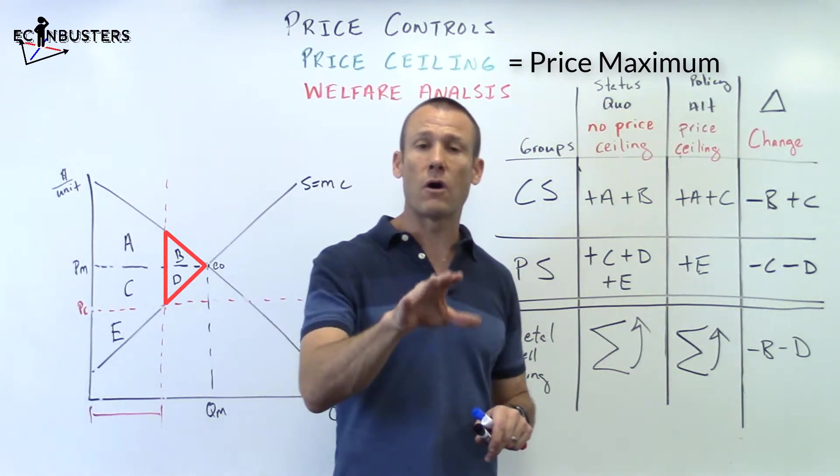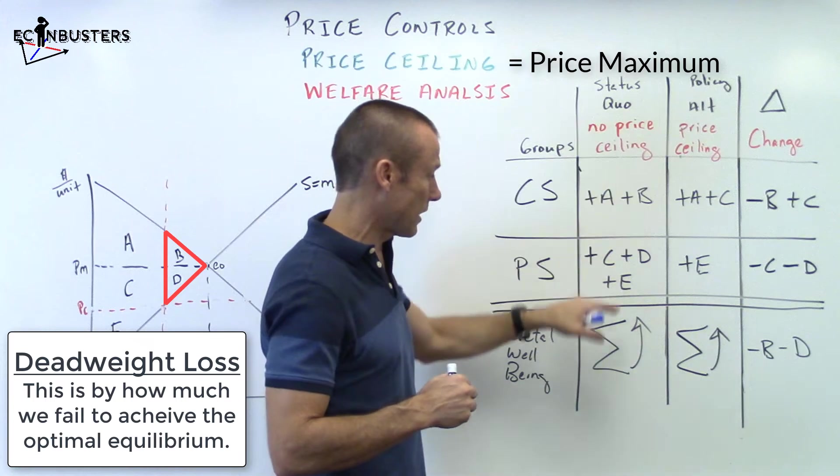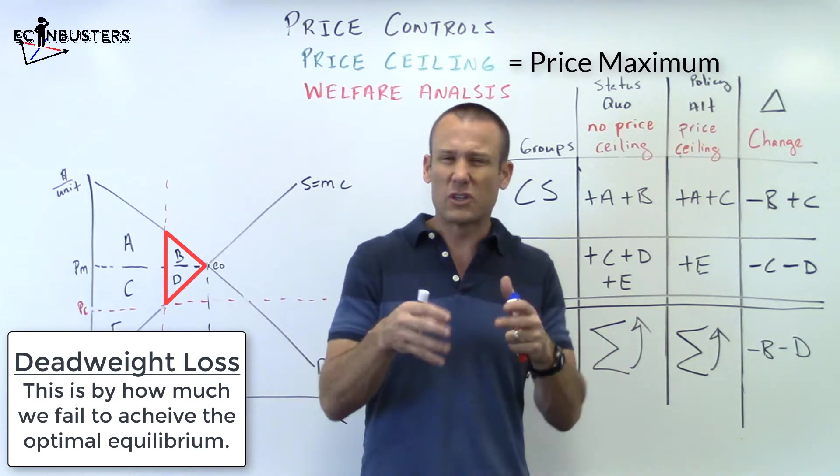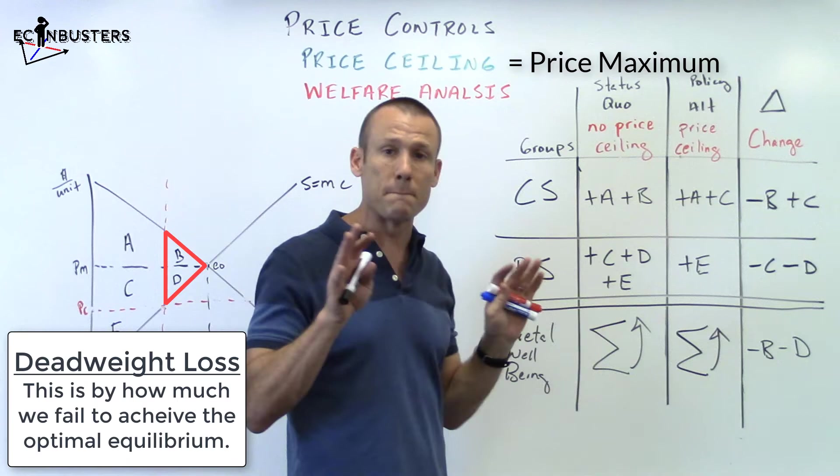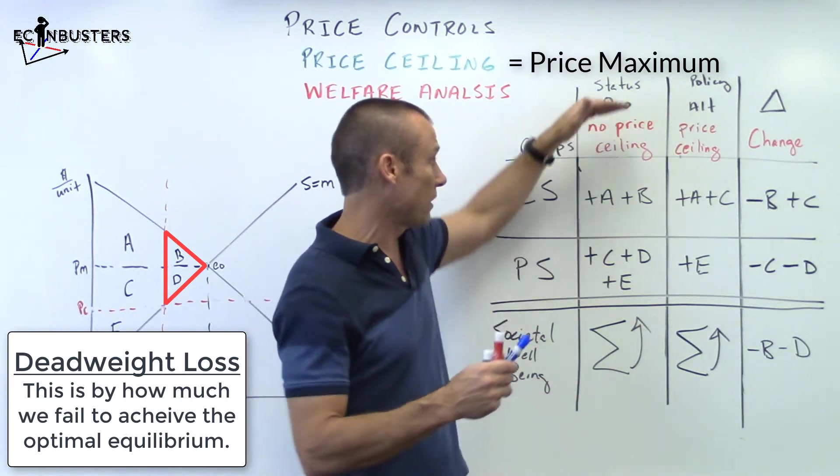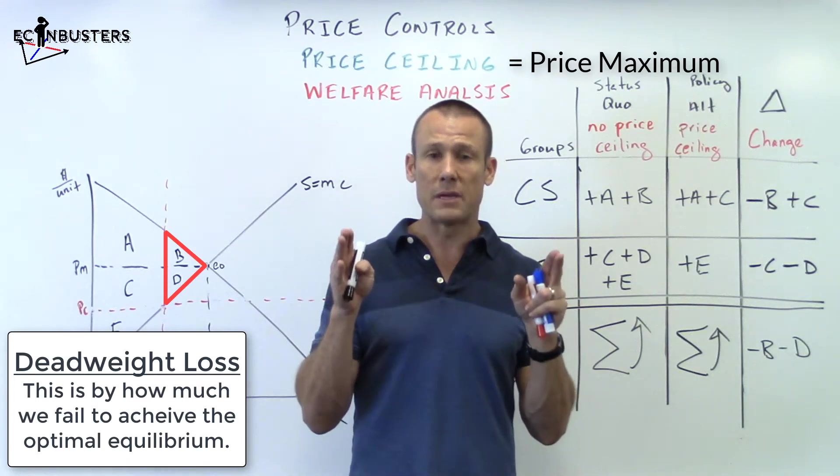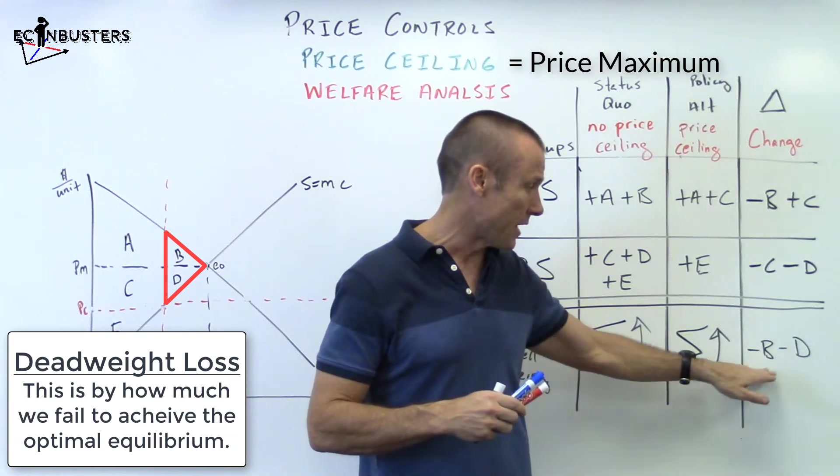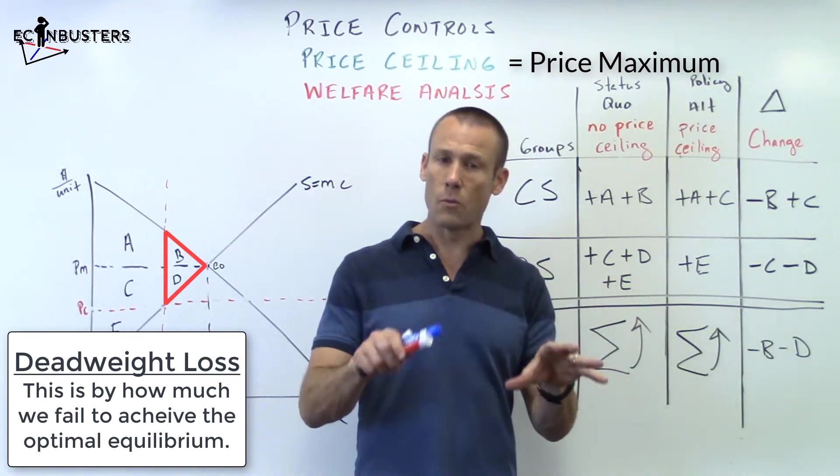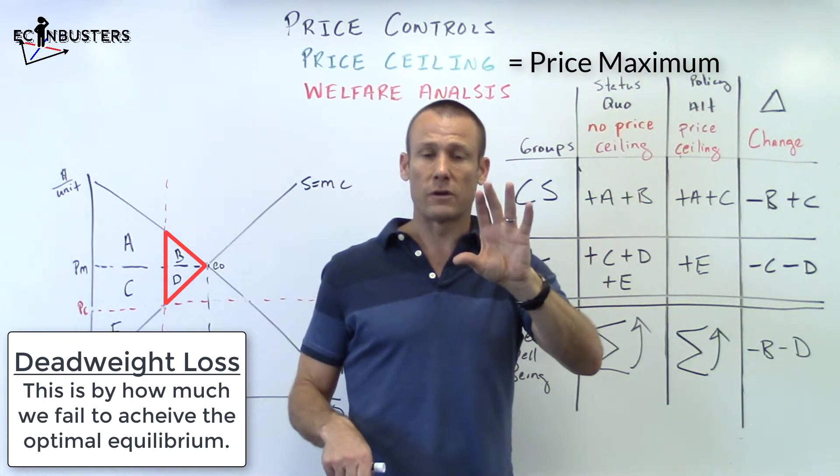So if we were getting max social surplus with the status quo, which could be the case or could not be the case, there's a lot of complexities that we're not ready for right now. But just for this video alone, let's assume that this is the max social surplus. Then what we would say minus B and minus D is, hey, that's the amount we fell short of max social surplus. And that's that new term I just introduced, deadweight loss. That would be our amount we fall short of max social surplus.